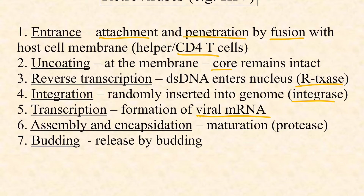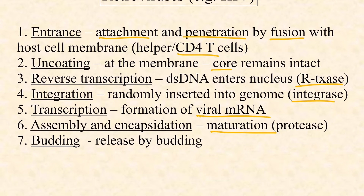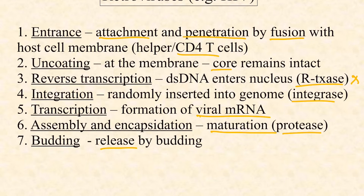Transcription happens eventually, usually after a latent phase, so viral messenger RNAs are produced as well as RNA genomes. Those RNAs can be fully expressed into proteins, and then we get assembly and encapsidation. This is called maturation and it happens at the membrane right before budding to release the virions.